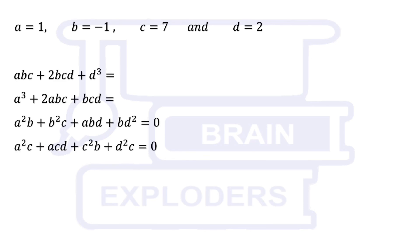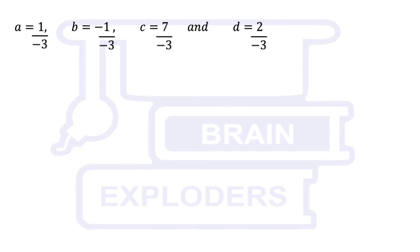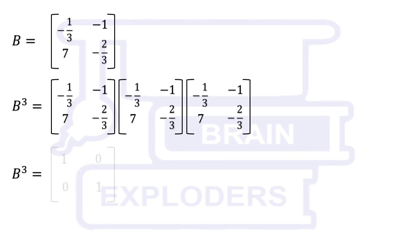All the terms in the left hand side of the equation are of third degree. Therefore, if we divide values of all the variables by minus 3, then the new values give us the desired result. We obtain a matrix which on cubing gives identity matrix.